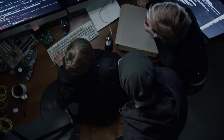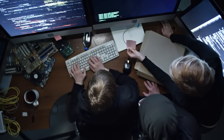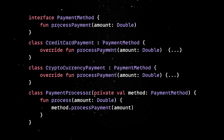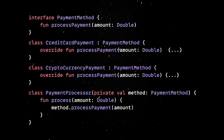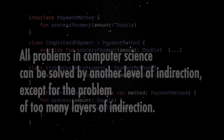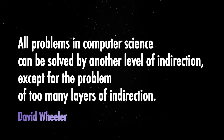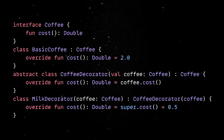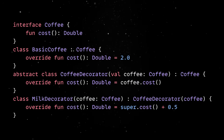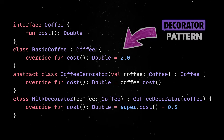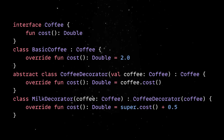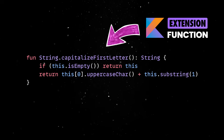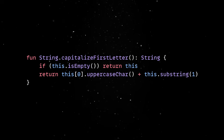But here's the catch: overengineering upfront can be just as harmful as ignoring the principle entirely. If you create abstractions for every possible extension before knowing if you'll ever need them, you might end up with unnecessary complexity. After all, all problems in computer science can be solved by another level of indirection, except for the problem of too many layers of indirection. To avoid premature over-abstraction, you can use the decorator pattern to wrap new functionality around existing code, or leverage extension methods that modern languages support to add functionality without modifying source code.